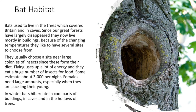Bat habitat. Bats used to live in the trees which covered Britain and in caves. Since our great forests have largely disappeared, they now live mostly in buildings. Because of changing temperatures, they like to have several sites to choose from. They usually choose a site near large colonies of insects since these form their diet. Flying uses up a lot of energy and they eat a huge number of insects — some estimate about 3,000 per night. Females need large amounts, especially when they are suckling their young. In winter, bats hibernate in cool parts of buildings, in caves, and in the hollows of trees.